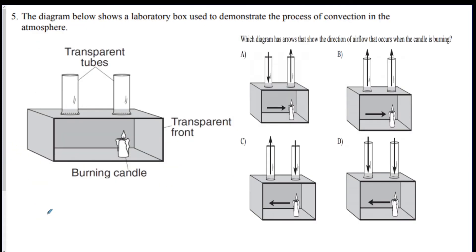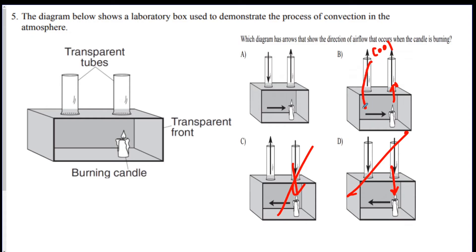Question 5: the diagram shows a lab box used to demonstrate convection — which arrows are correct? You can eliminate some options: with a burning candle, the air is going to go up, so eliminate D which shows it going down, and eliminate C which also shows it going down. Since air rises off the burning candle, the cool air out to the side comes back down to make a convection current. A is the best answer.